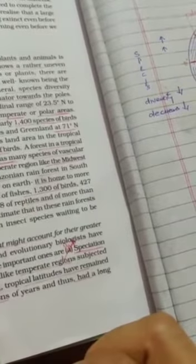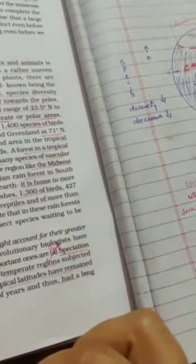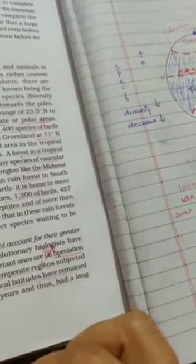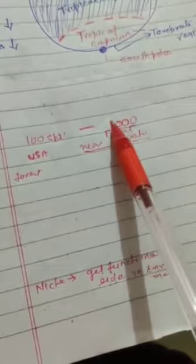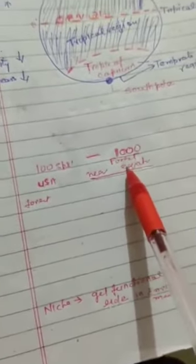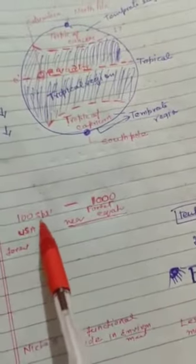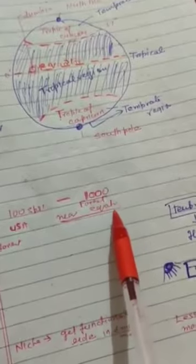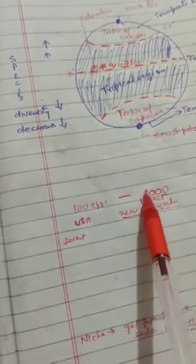To understand this comparison: suppose 100 species of plants or animals are found in any given forest in the USA, which is a temperate region. If you compare it with a forest near the equator — like in India — you would find around 1,000 species there. So the difference is huge: 100 in the temperate USA versus 1,000 near the equator, just because one is in the temperate region and the other is in the tropical region.